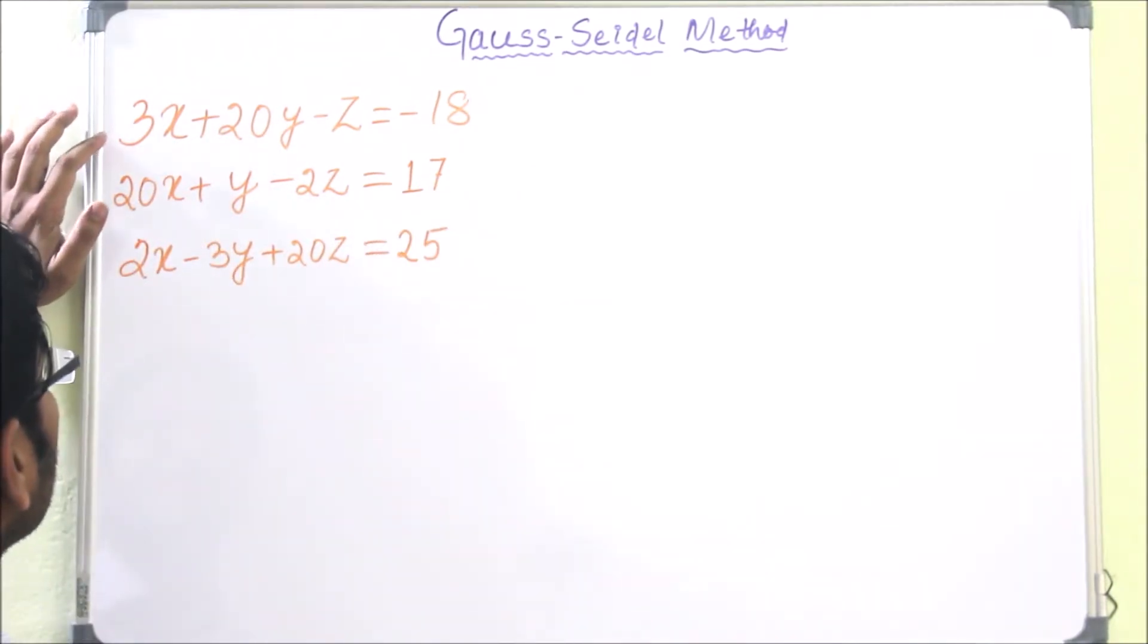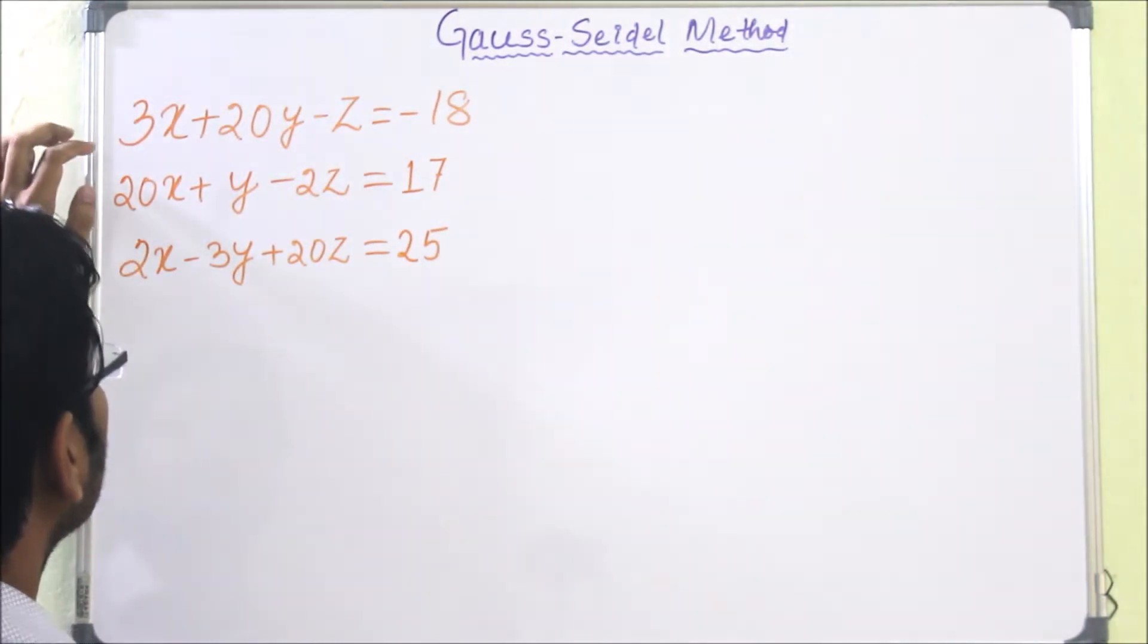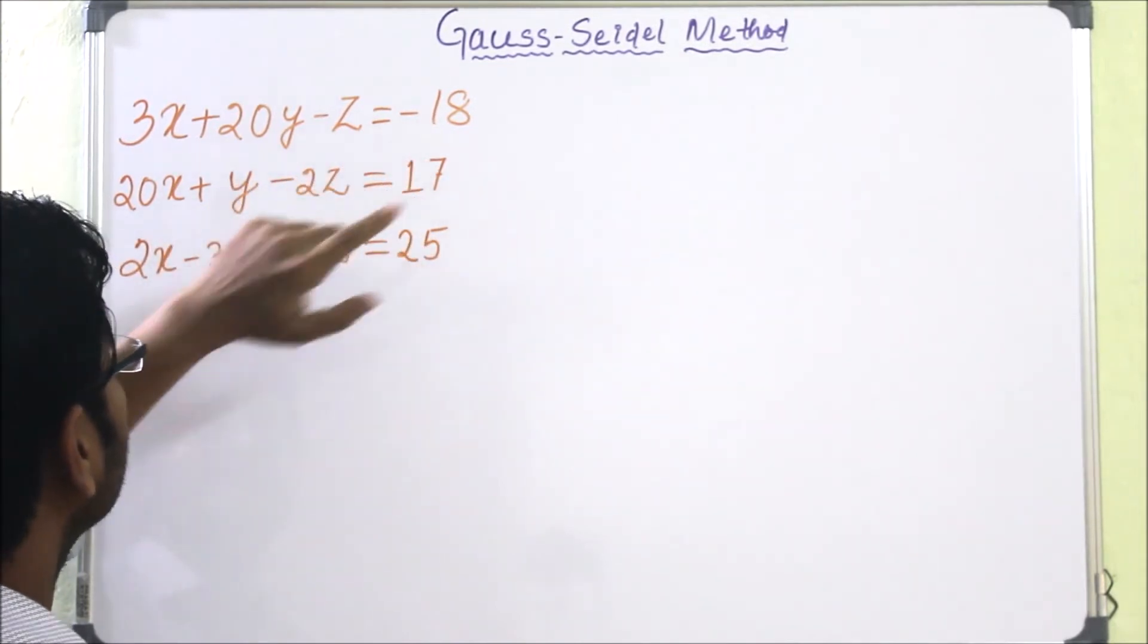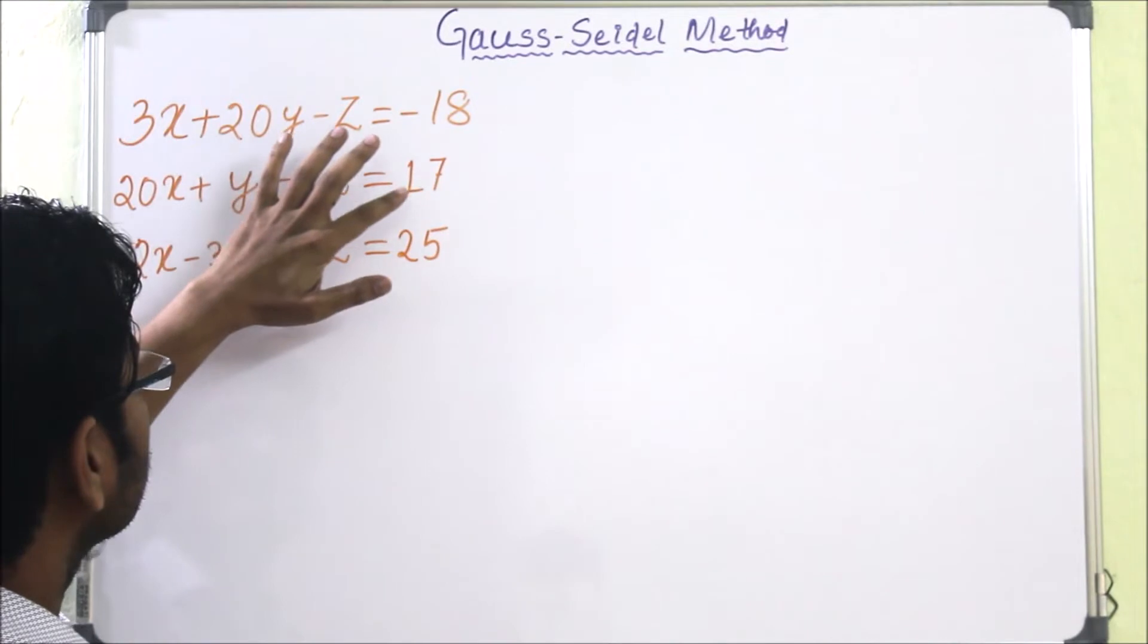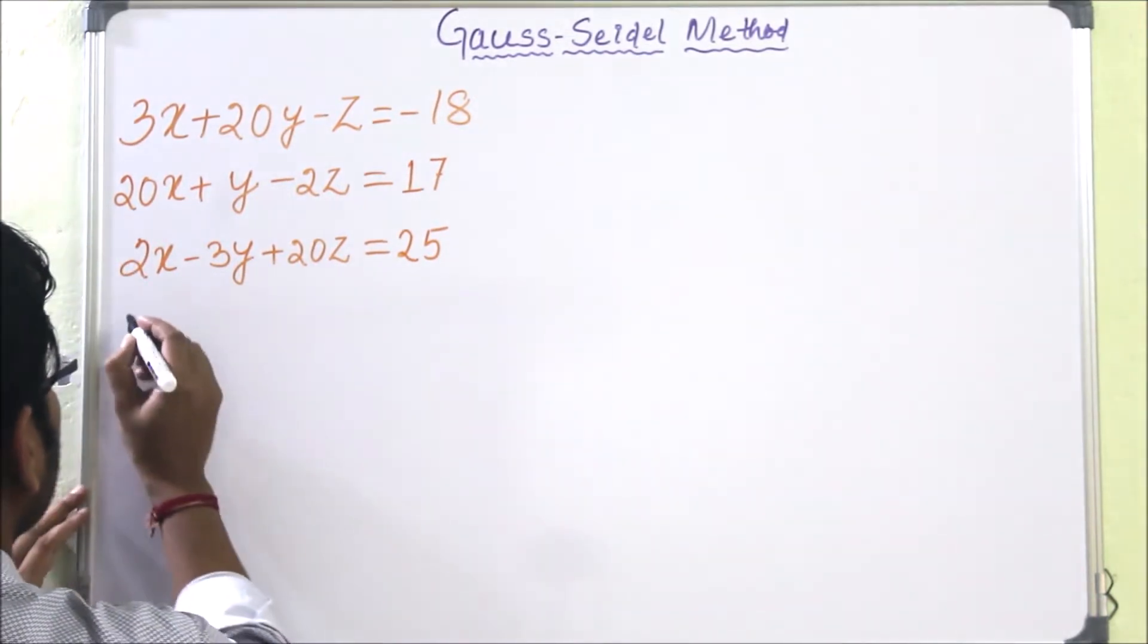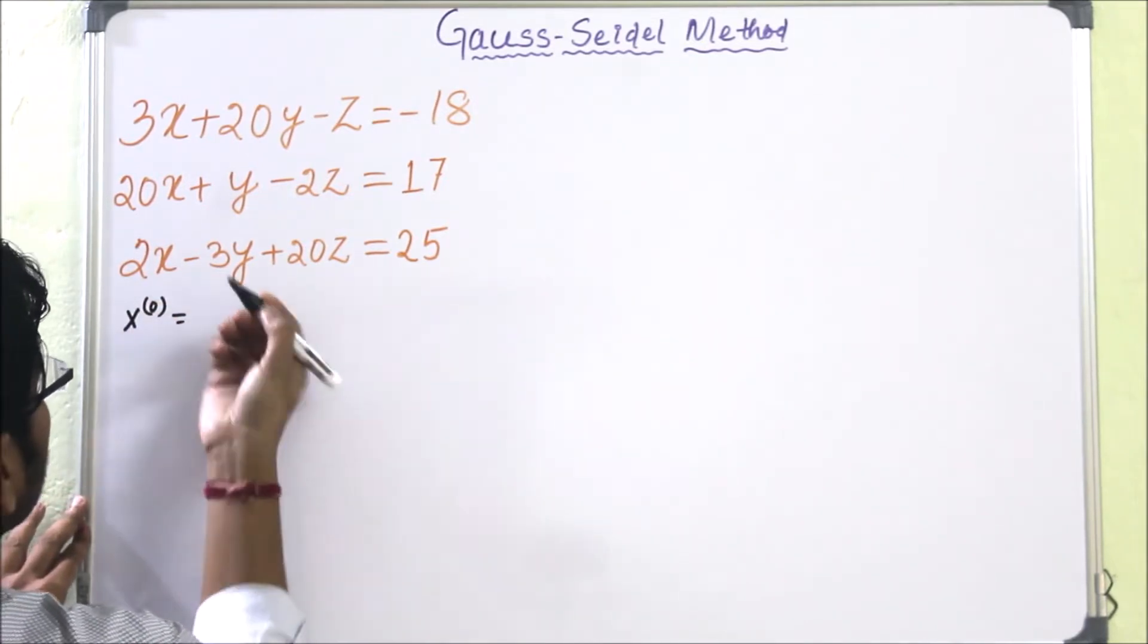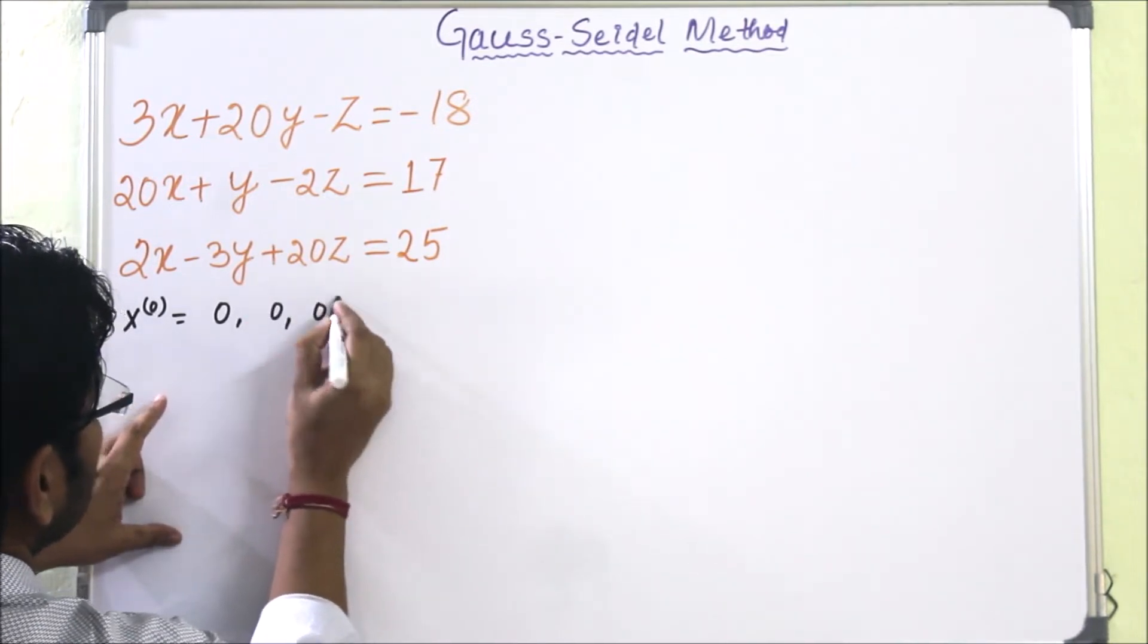So the problem is that we have to find x, y, z in this system where the first equation is 3x plus 20y minus z equal to minus 18. 20x plus y minus 2z equal to 17 is the second equation. Third equation is 2x minus 3y plus 20z equal to 25. And the initial vector we have to take is 0, 0, 0.